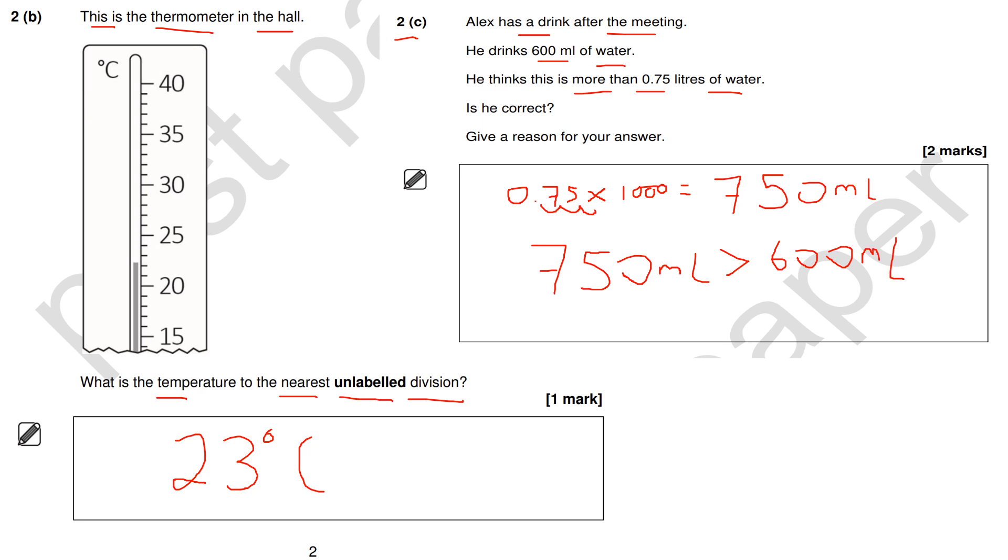But I could have of course converted this into liters and compared it. So this is actually equal to 0.6 liters, or 0.60, and you can see that 0.75 is bigger than 0.6 liters. Therefore, Alex is wrong.